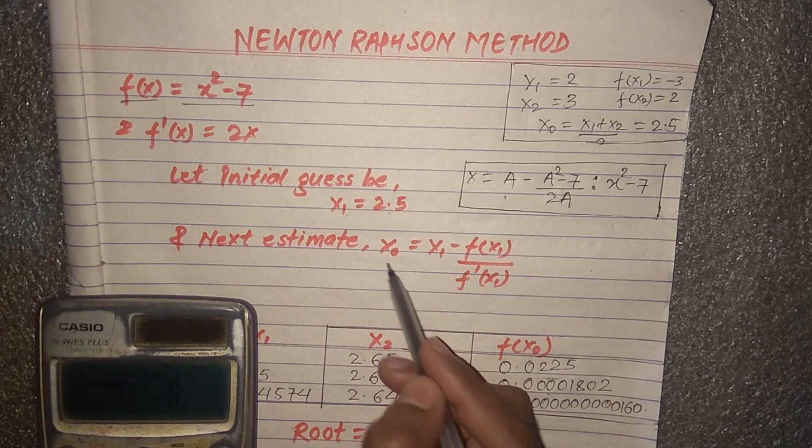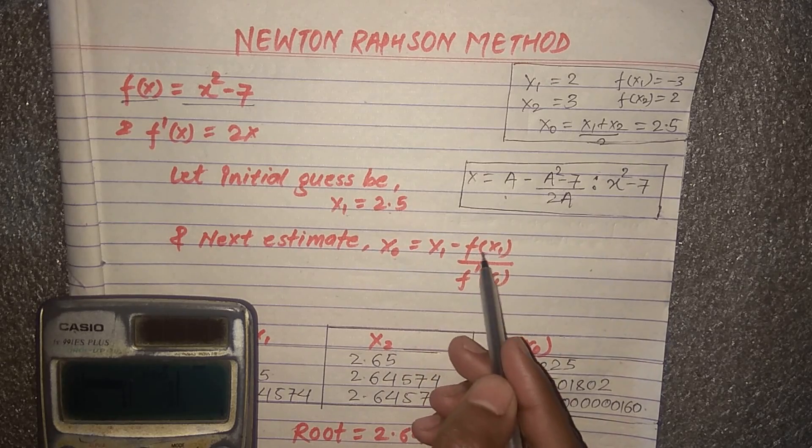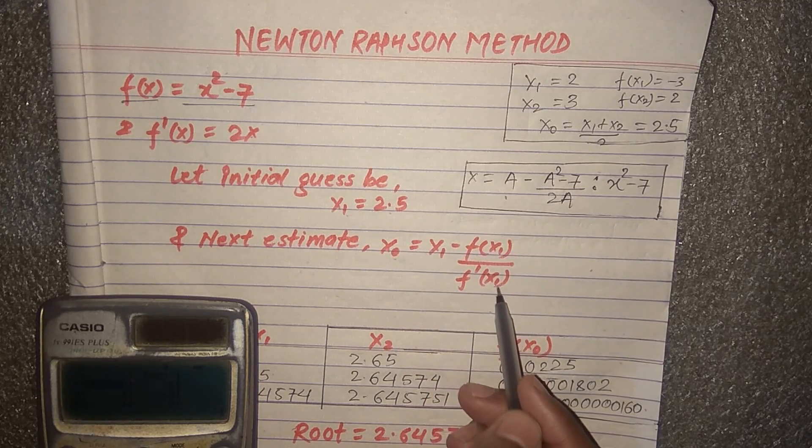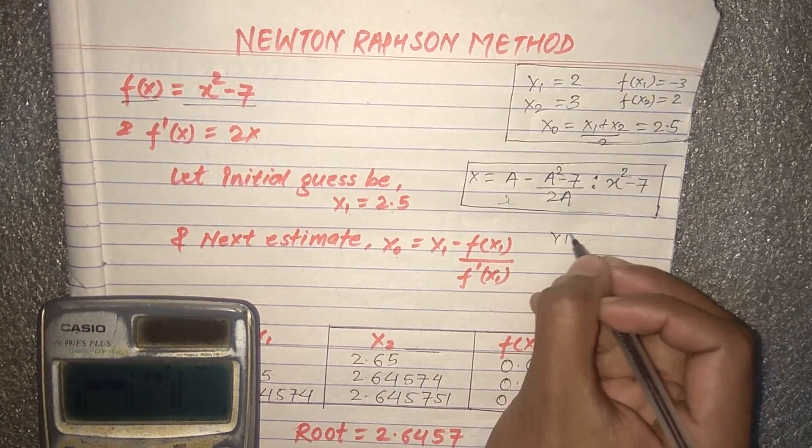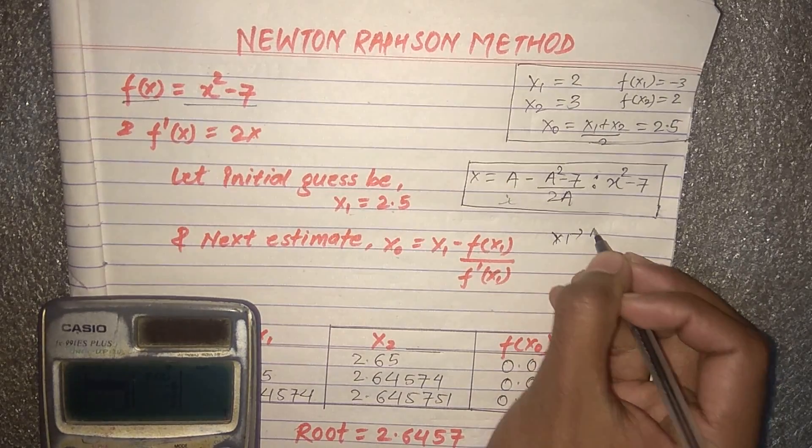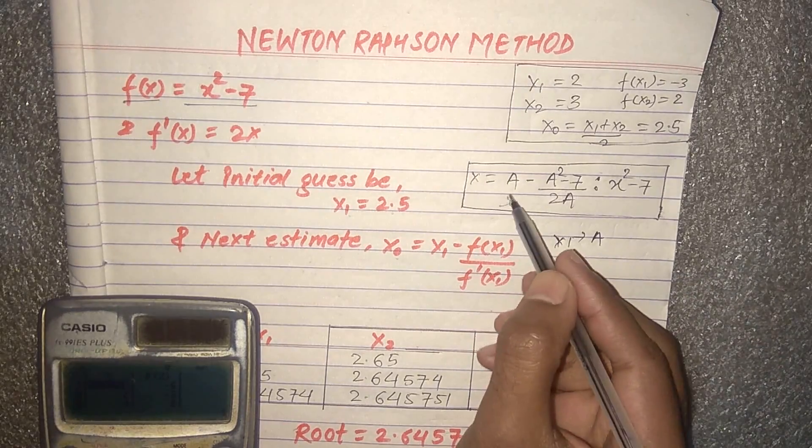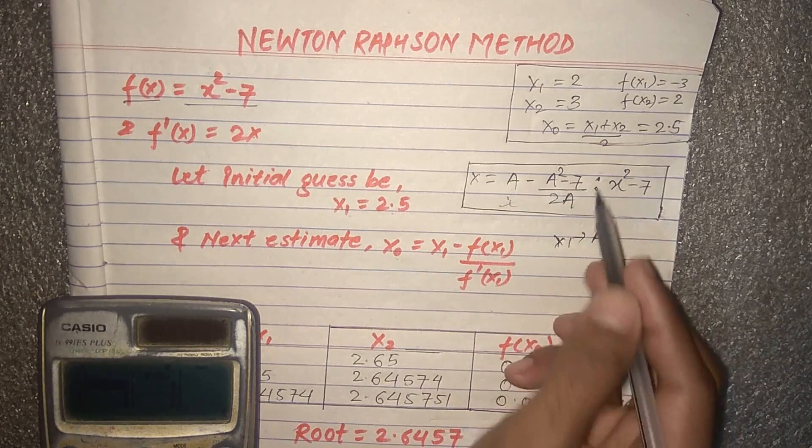We have the formula for Newton's Raphson method: x₂ = x₁ - f(x₁)/f'(x₁). Now we'll put this value in the calculator. Here x₁ is replaced by a. Now we'll put this equation in the calculator.